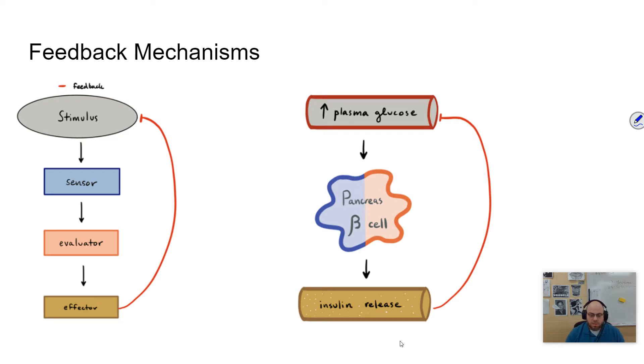Organisms use feedback mechanisms to maintain their internal environments, to respond to external stimuli. And so as internal and external environments change, the body has to respond to that. And these feedback mechanisms allow for that response. It allows you to change your behavior in order to deal with that change.